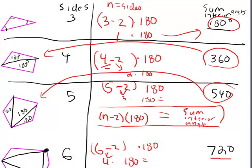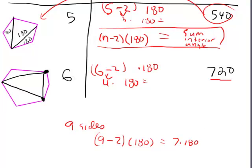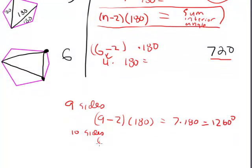You can do this for any shape. For a hexagon or a nonagon — a nine-sided shape — nine minus two is seven, times 180 equals 1260 degrees as the sum of its interior angles. What about a ten-sided shape? Ten minus two times 180, or eight times 180, gives us 1440 degrees if you add up all of the interior angles.